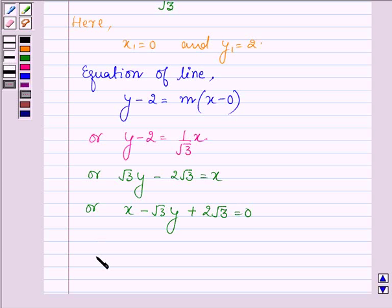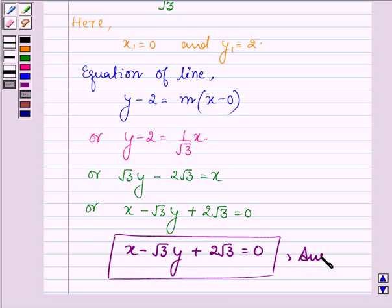Thus equation of a line satisfying the given condition is given by x minus root 3y plus 2 root 3 equals 0. So this is our answer. And this completes the session. Take care and have a good day.